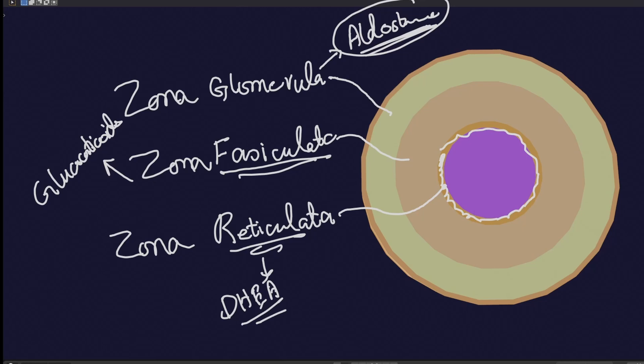Zona fasciculata is going to form the glucocorticoids, and then finally zona reticulata, which is going to form DHEA and some sex hormones. So the outer layer has the watery stuff — aldosterone — then there are the glucocorticoids, and finally the sex hormones are released from the deeper zona reticulata.